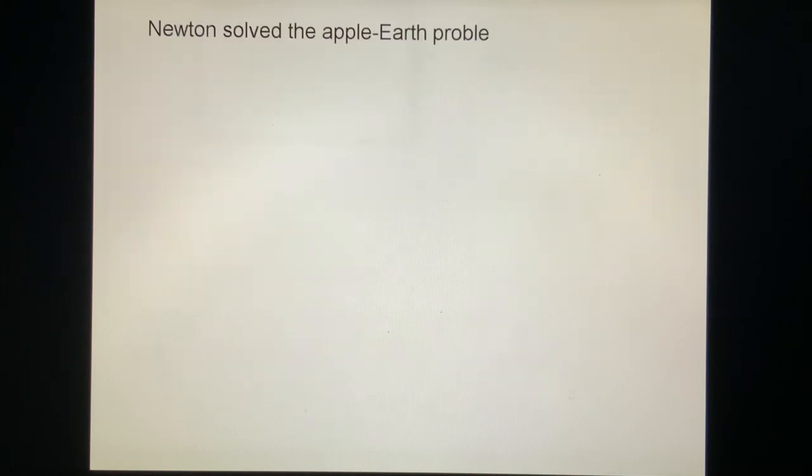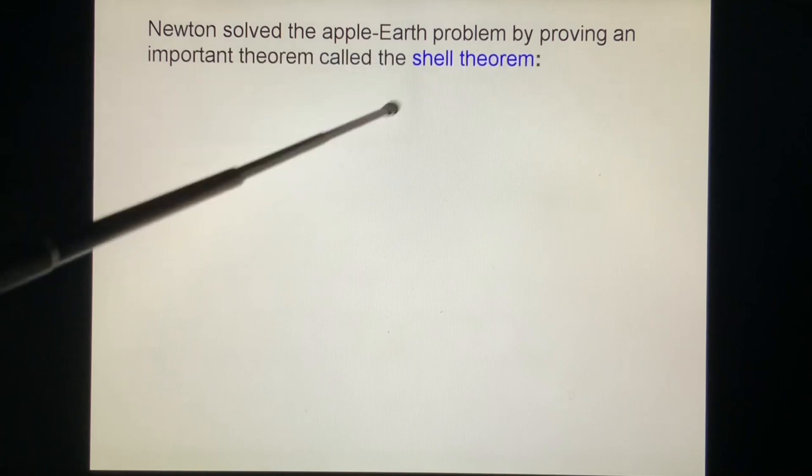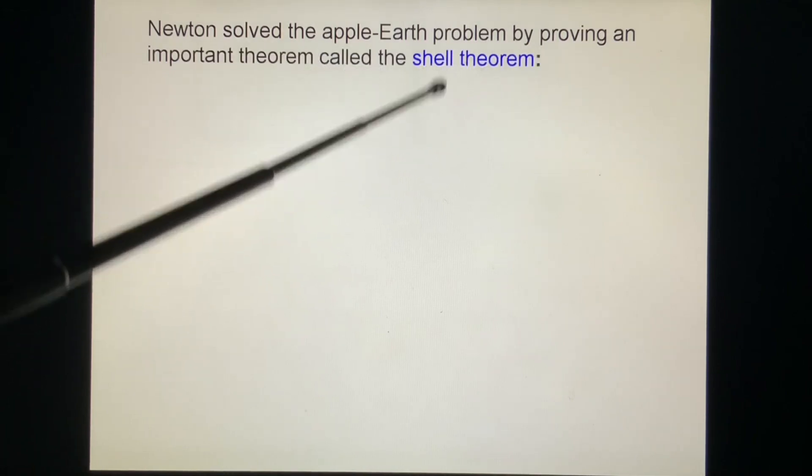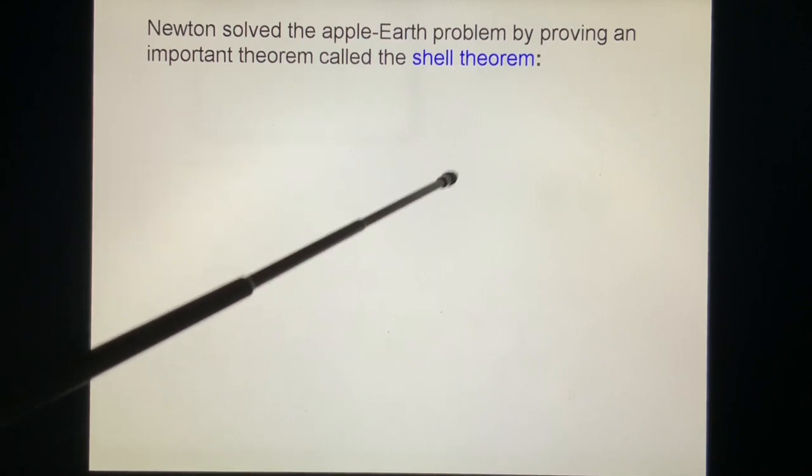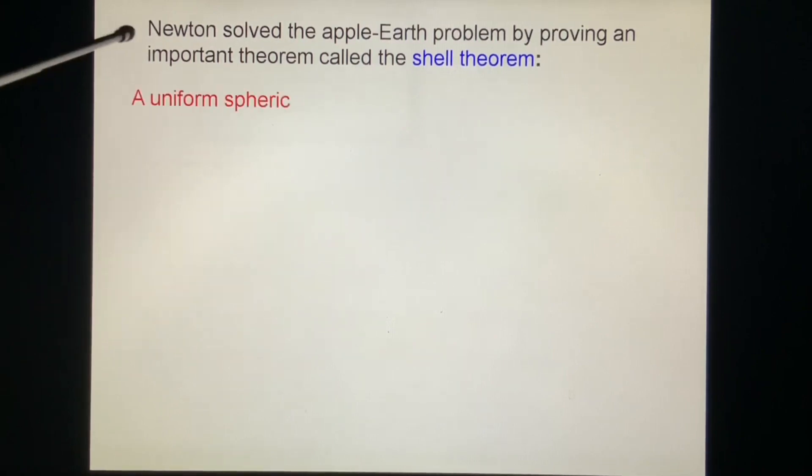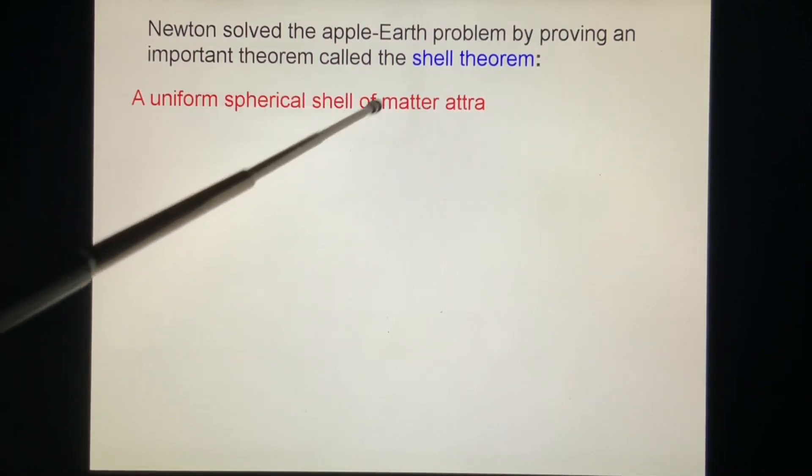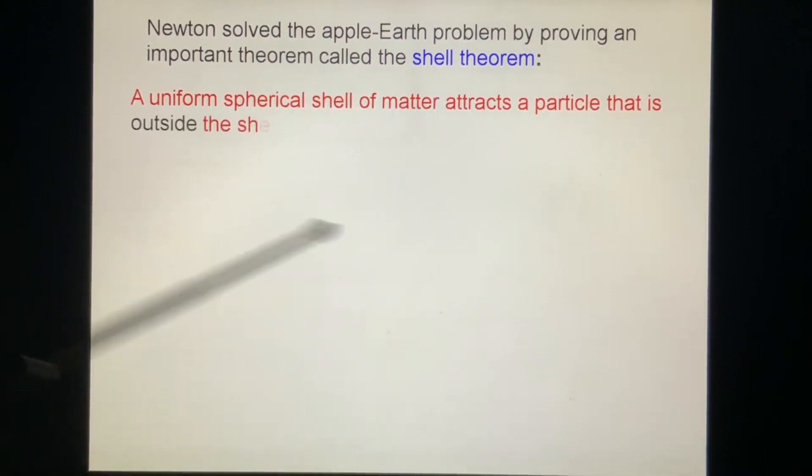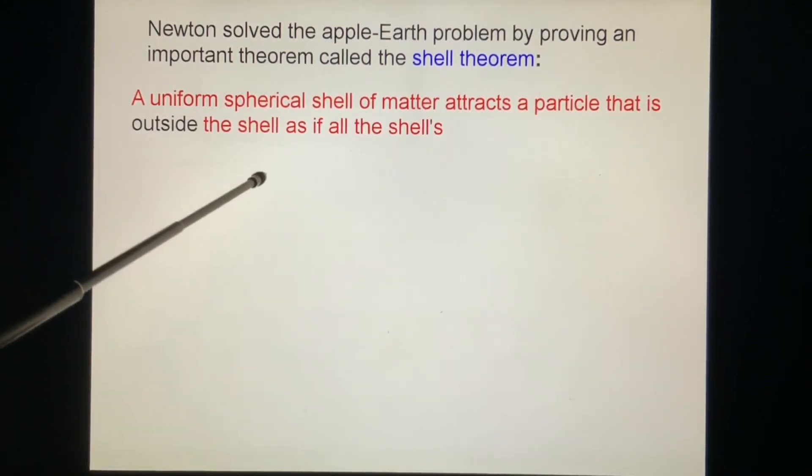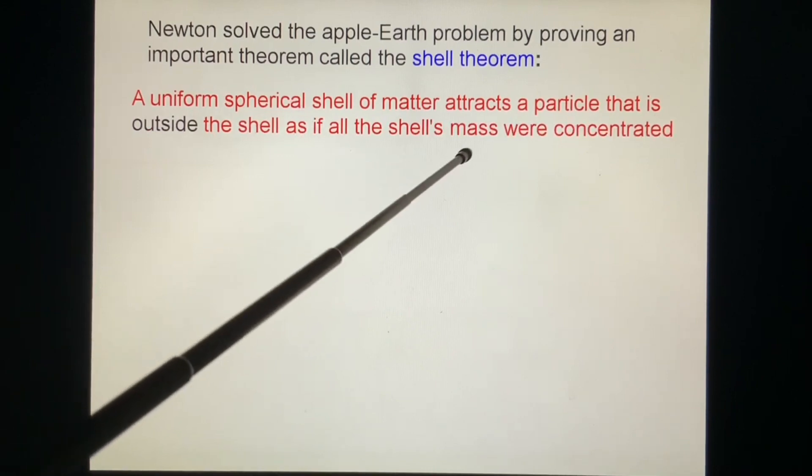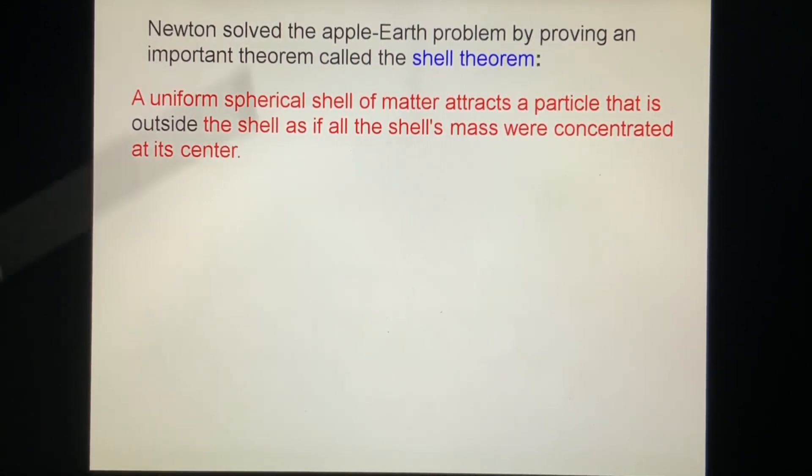Newton solved the apple-earth problem by proving an important theorem called the shell theorem. We will prove part of it later. A uniform spherical shell of matter attracts a particle that is outside the shell as if all the shell's mass were concentrated at its center.